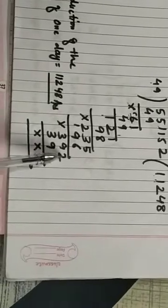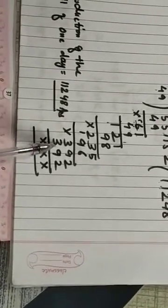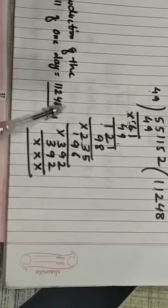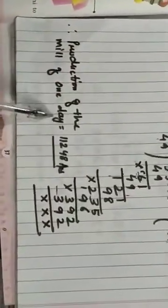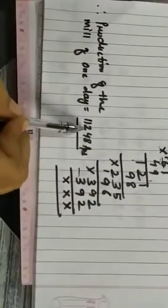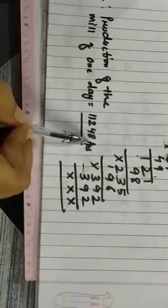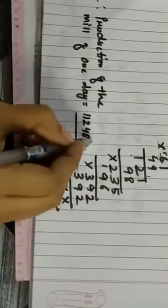Again we will take one number down — that is the last number, 2. So 2 is here. So 49 into 8 equals to 392. 392 minus 392 equals to 0. So the production of the mill in 1 day equals to 11,248 metres of cloth.